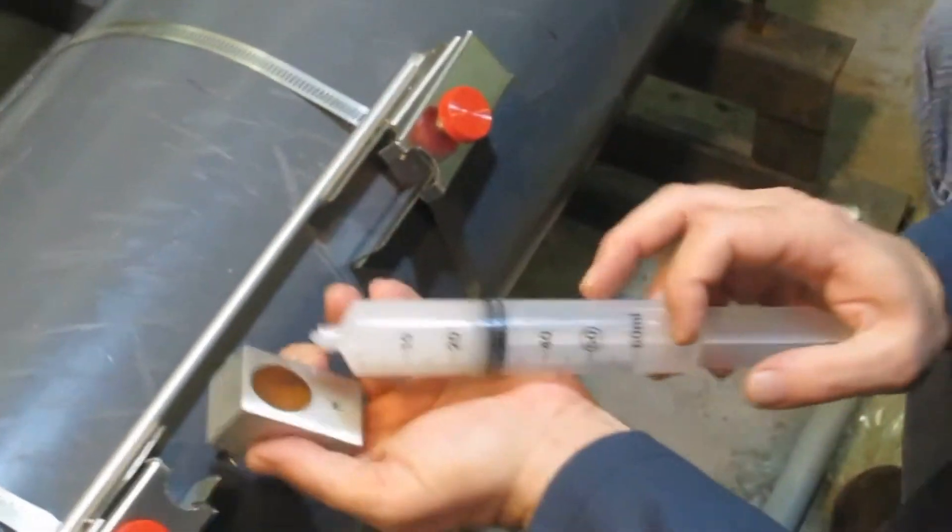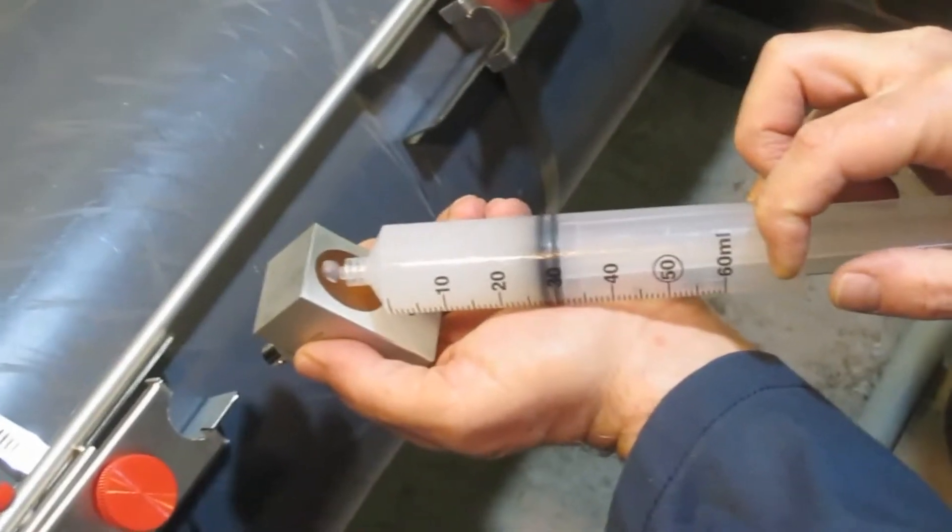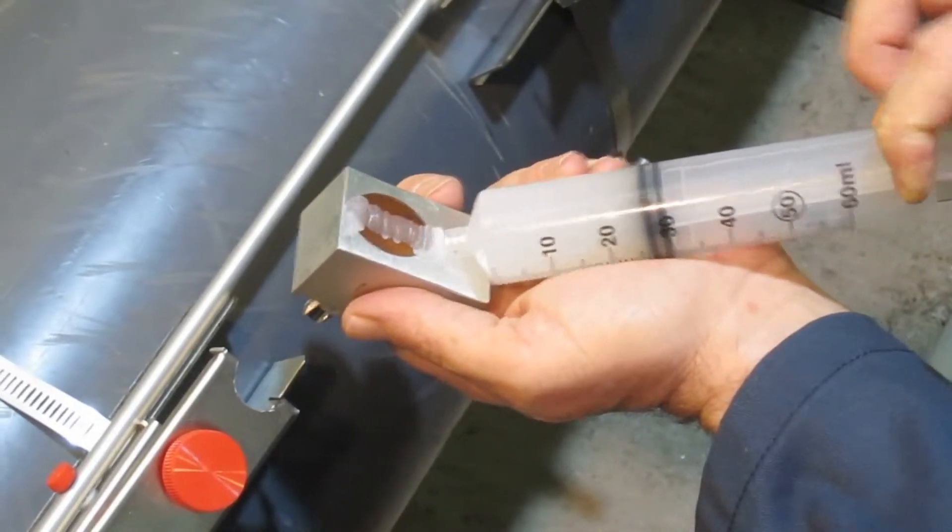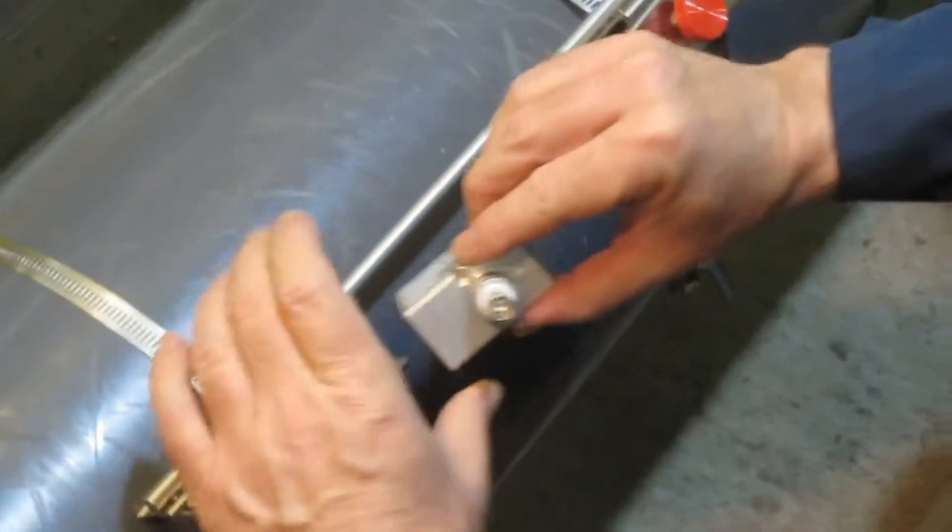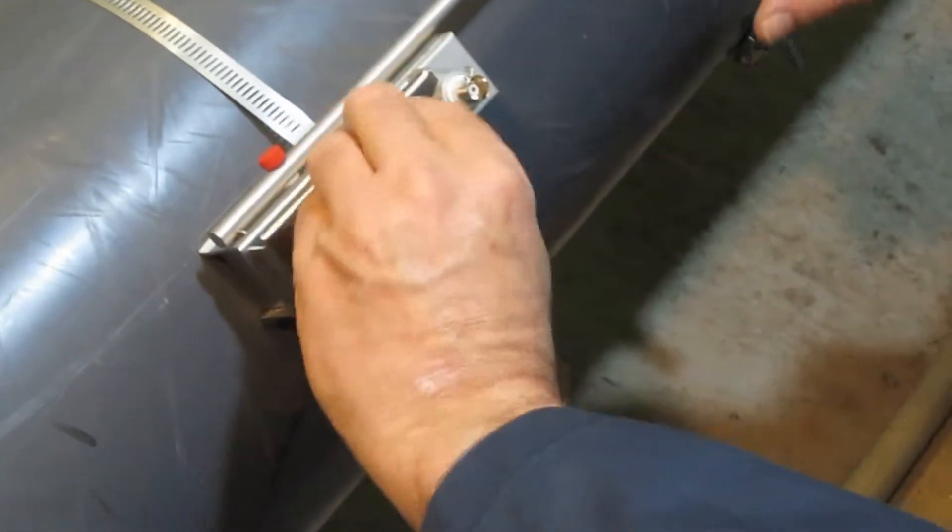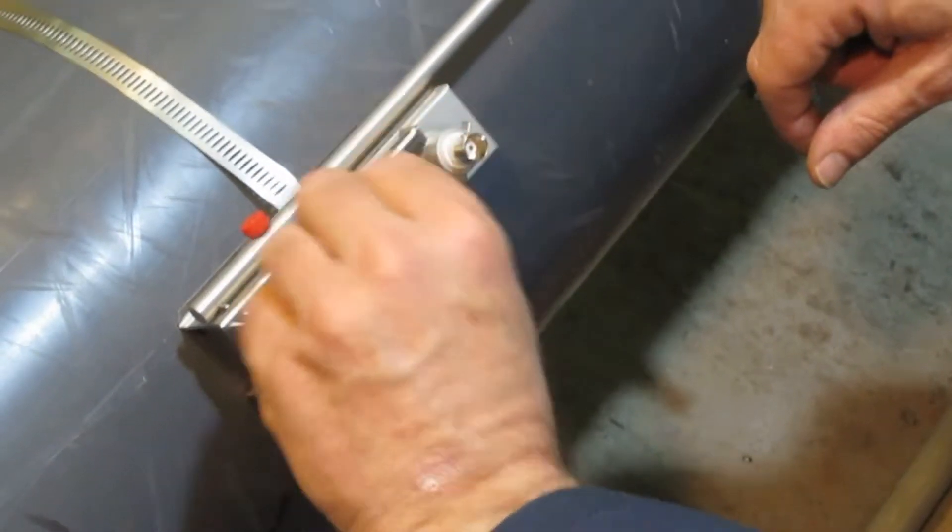Coupling compound is applied to the face of each transducer to help conduct sound efficiently into the pipe. Then we insert the transducer into the mounting bracket and secure in place.